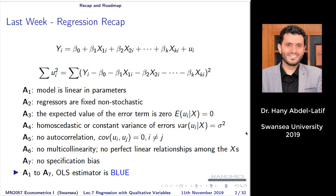Best means efficiency. If we have multiple unbiased estimators, the best is the one with minimum variance. So BLUE stands for: Best (minimum variance among unbiased estimators), Linear (linear in parameters, not raised to any power), and Unbiased (expected value of estimator equals the true parameter beta).